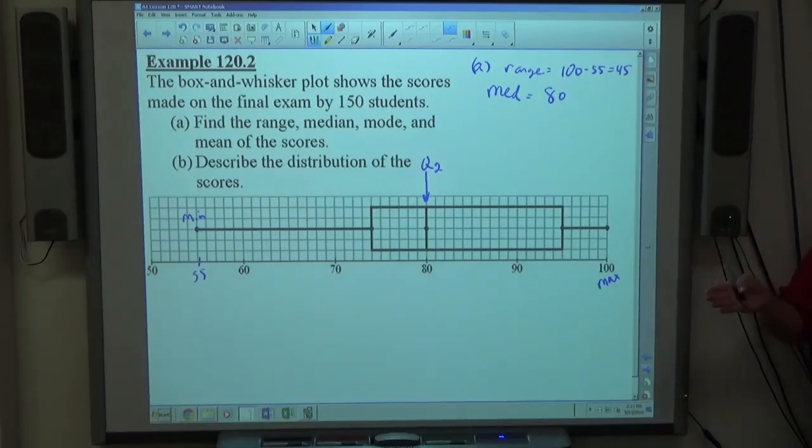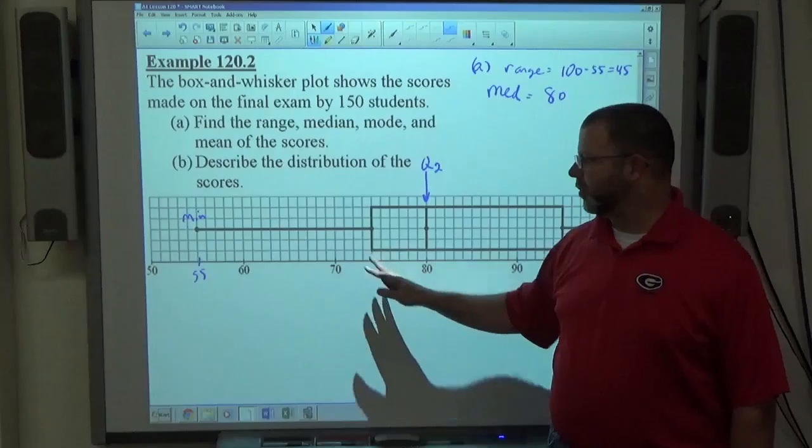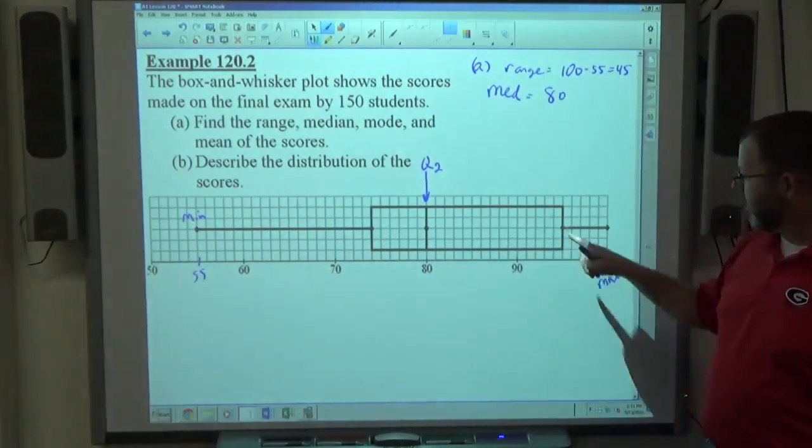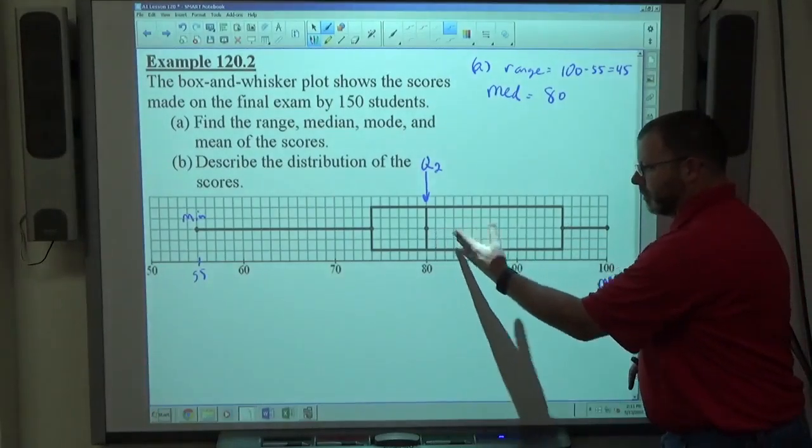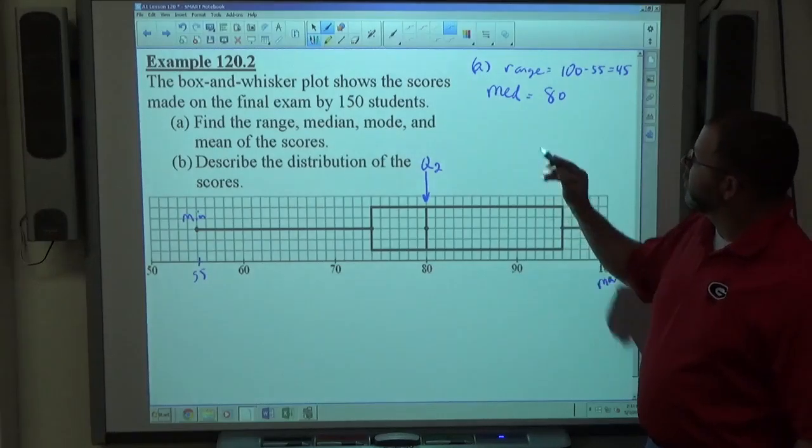And I also know the median of the first half of the data, which would be 74. Half the scores lie below 74, the other half lie between 74 and 80, and then 95 would be the other one. A quarter of the scores lie between here and there. So that's doable.